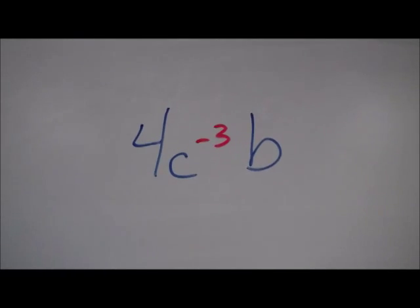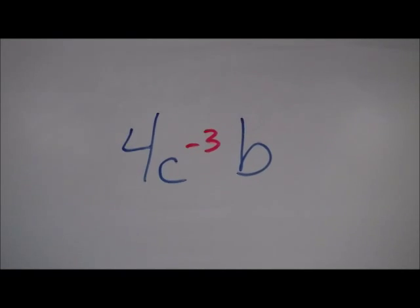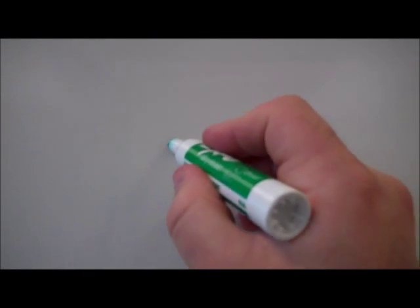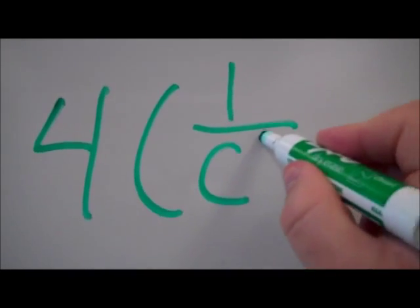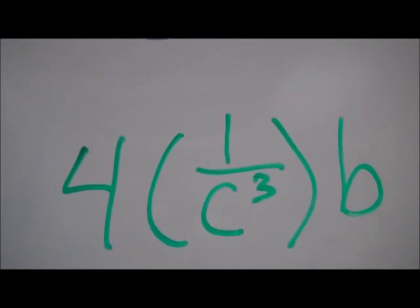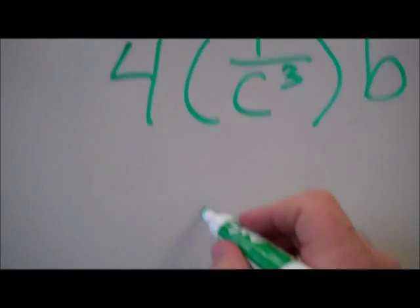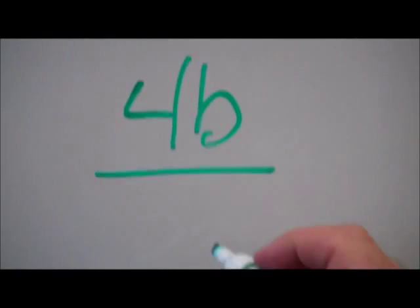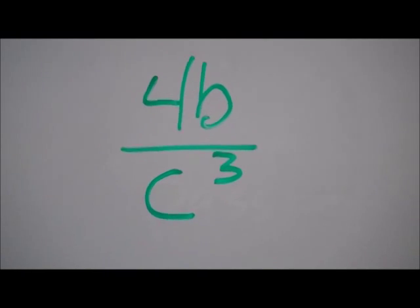In a problem like this, where it's 4c to the negative 3 times b, I have to simplify this c to the negative 3. So it's 4 — c to the negative 3 is the same thing as 1 over c to the third — times b. From here it's just a simple multiplication problem: 4 times 1 times b, so it's 4b over c to the third. 4 times c to the negative third power times b simplifies to 4b over c cubed.